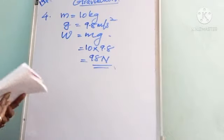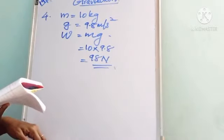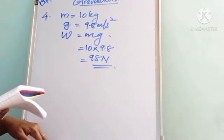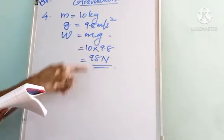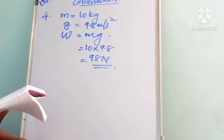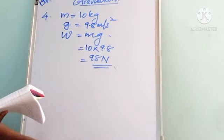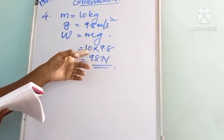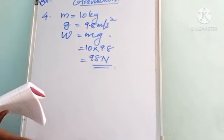To summarize: mass = 10 kg, using W = m·g, substituting g = 9.8 m/s² and m = 10 kg, we get W = 98 N — that is the weight of the object on Earth.